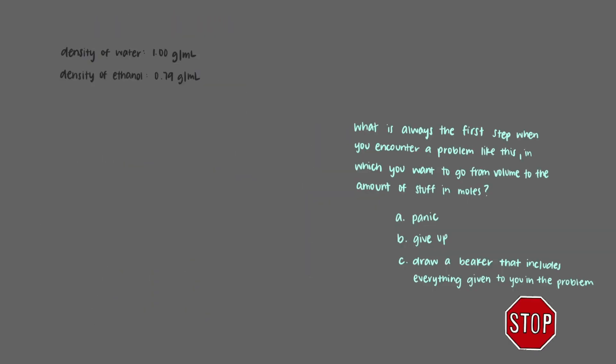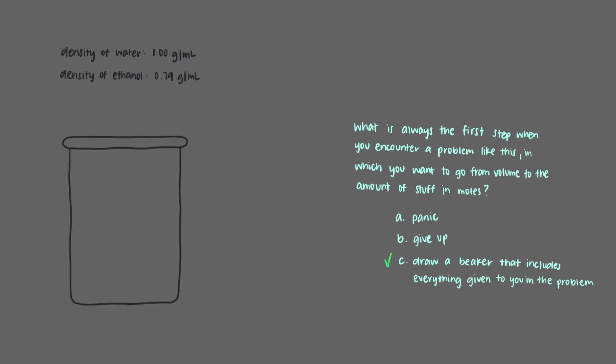What is always the first step when you encounter a problem like this, in which you want to go from volume to the amount of stuff in moles? When we have a lengthy word problem like this, it's good to get into the habit of drawing a beaker and putting the amount of stuff into it. Currently, what we can put under the beaker are the volumes of ethanol and water. The volumes go under the beaker, but our goal is to convert these to moles of each and put those numbers in the beaker.